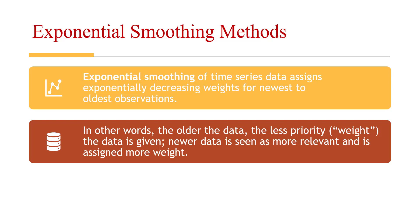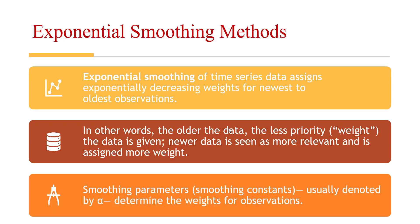In this method, we will assign more weights to the actual data and less weights to the forecasted data, and vice versa, depending on the forecast error. In order to calculate the smoothing, we are always given with the smoothing constant or the smoothing parameter. This is denoted as alpha.